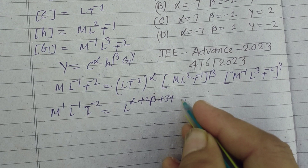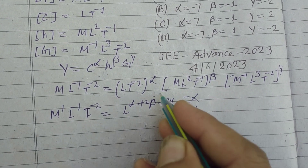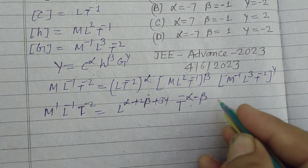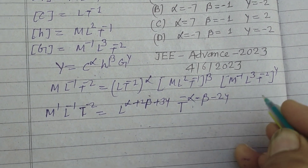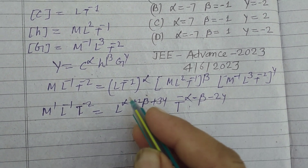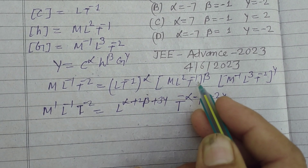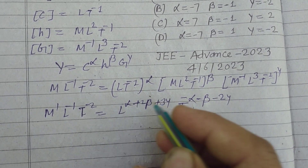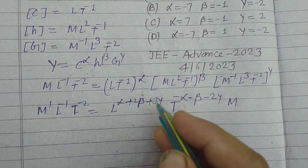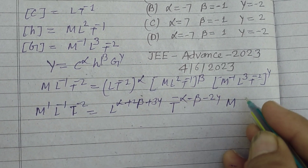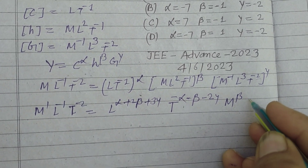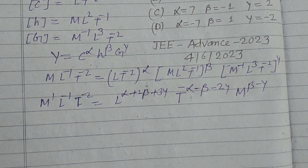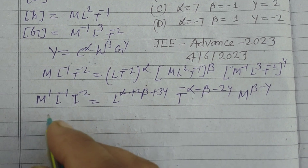For the T dimension on the right side, we get T to the power (minus alpha minus beta minus 2 gamma). So comparing M, L, and T powers from both sides gives us our system of equations.